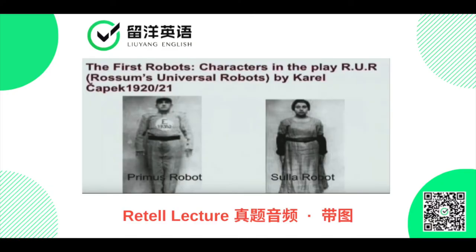This is a kind of object that you're probably all familiar with when you hear the term robot, but I'm going to show you the very, very first robots. These were the very first robots — characters in a play in the 1920s called Rossum's Universal Robots, written by a Czech writer called Karel Čapek.